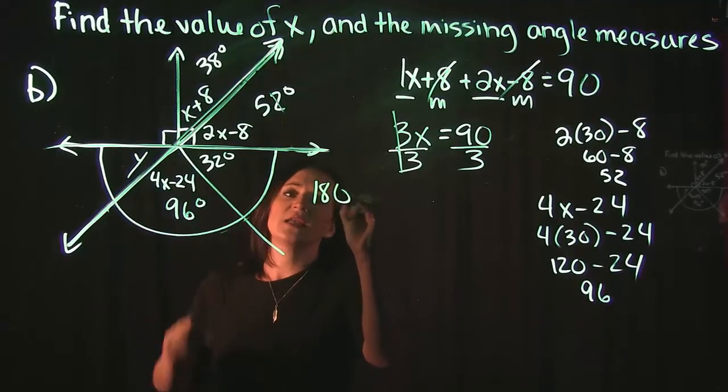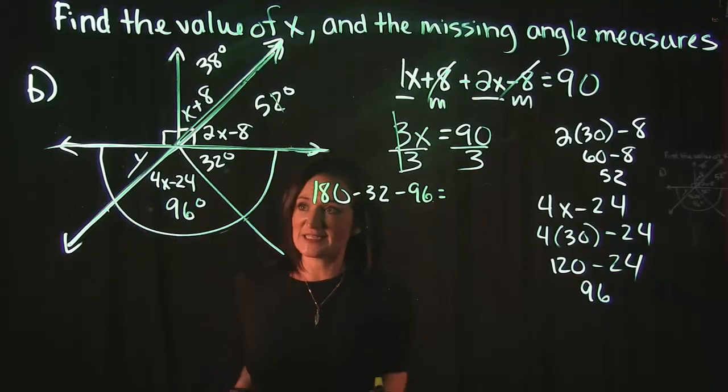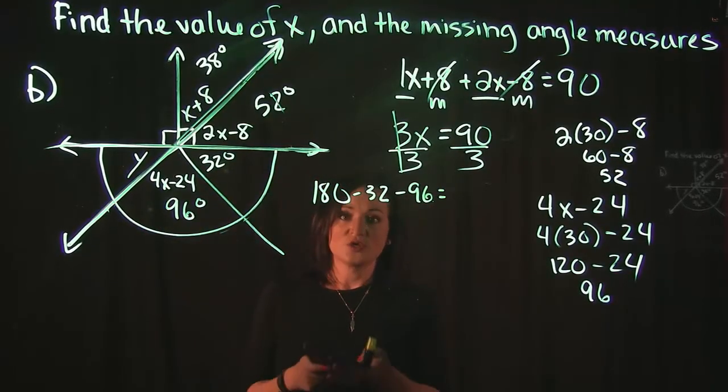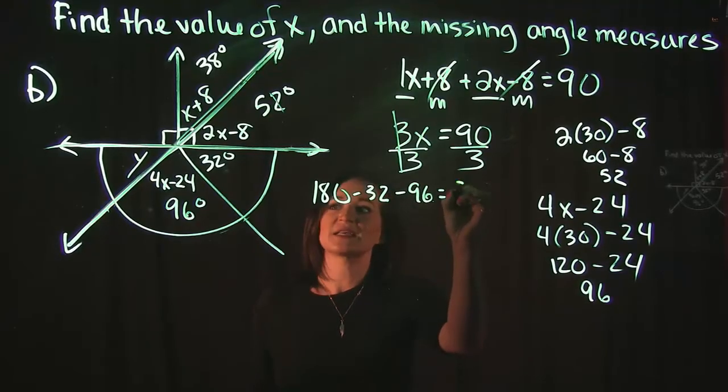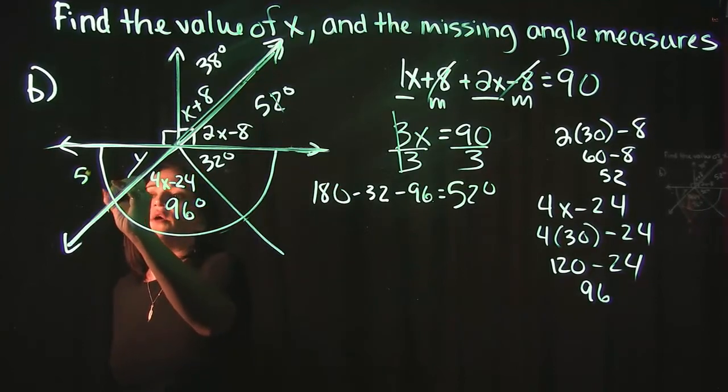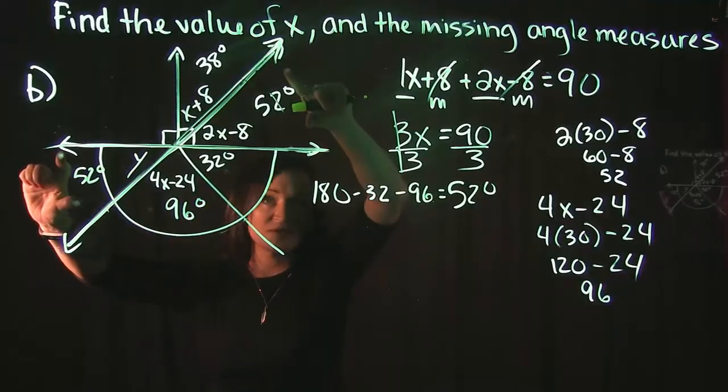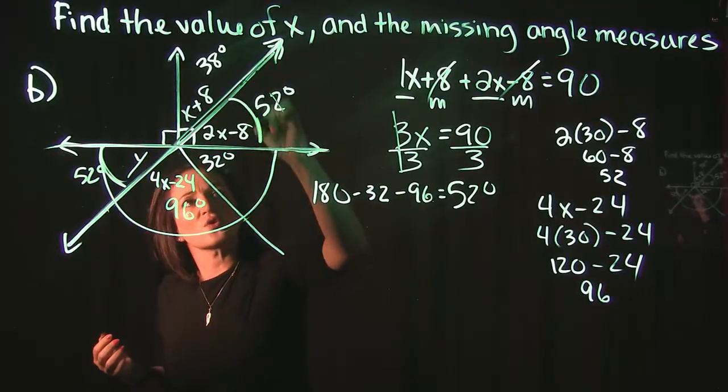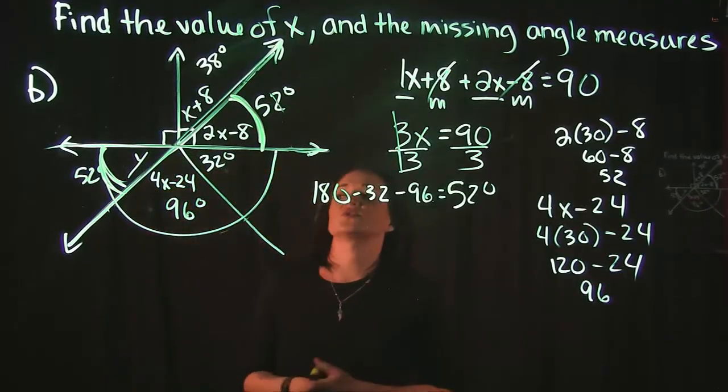All right, so if we do 180, we know this one is 32. We know this one is 96. It should then give us what y is equal to. So 180 minus 32 minus 96 is equal to 52 degrees, which we can see is actually equal to the 52 degrees of this one over here. These two are obviously vertical angles of each other since vertical angles are equal to each other.